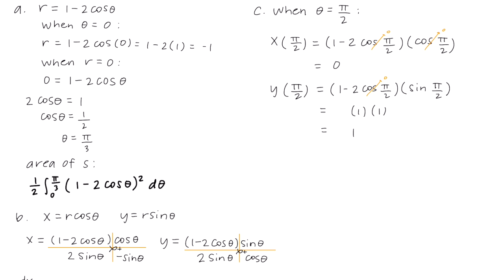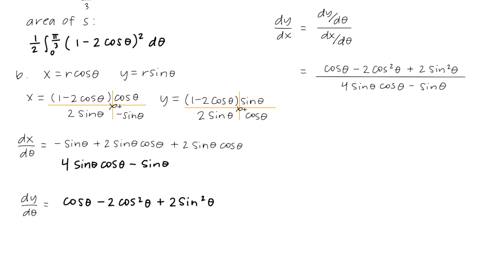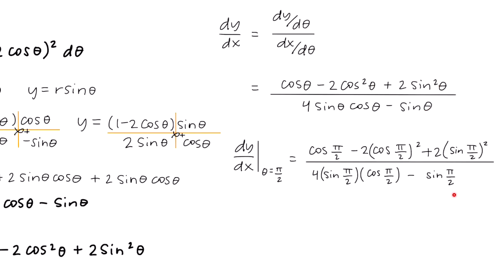Next we find the slope. dy/dx equals (dy/dθ) divided by (dx/dθ). We substitute the expressions from Part B into the numerator and denominator, then plug in theta equals pi over 2. Cosine of pi over 2 is 0, which simplifies things greatly. Sine of pi over 2 is 1, so the slope works out to negative 2.